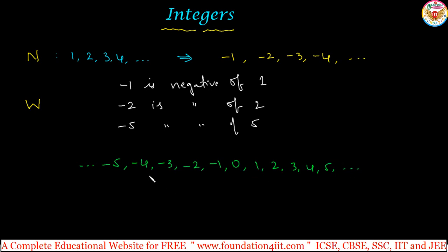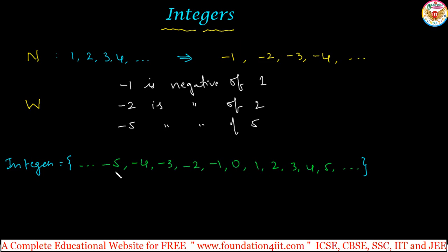If you notice, considering these new numbers together with whole numbers, we get a new connected series. These numbers you can call integers. So, natural numbers plus negative natural numbers including 0 — that means negative natural numbers plus whole numbers — are also called integers.